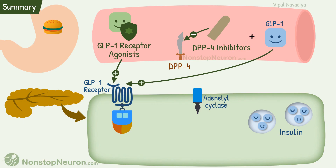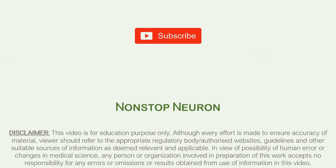I hope this clears up the mechanism of action of GLP-1 receptor agonists and DPP-4 inhibitors. That's it for this video. If you feel this video will help your friends and colleagues, please share it with them. And don't forget to subscribe because lots more is to come. At Non-Stop Neuron, we are making medical education as easy as watching cartoons. Thanks for watching — see you in the next video.